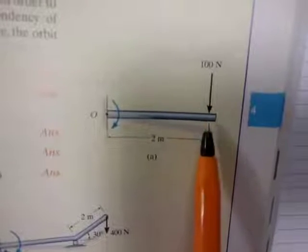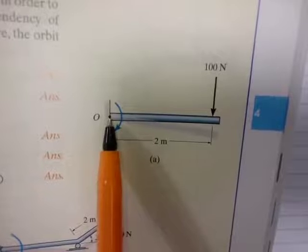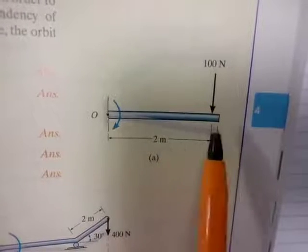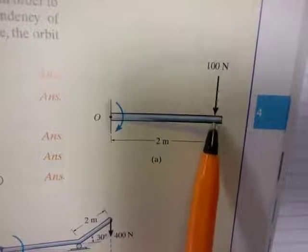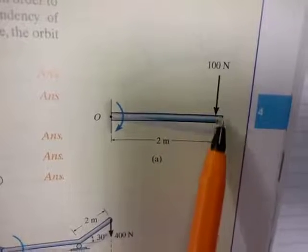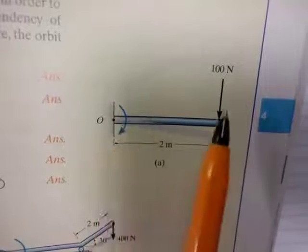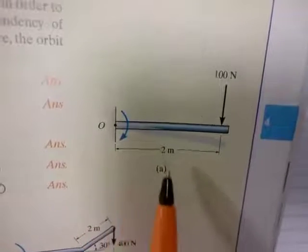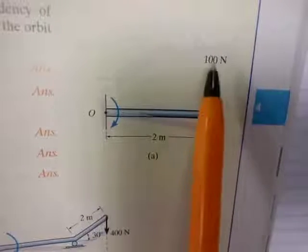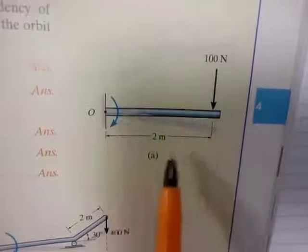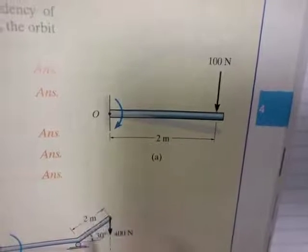If we have a force of 100 N applied to this beam and we're looking at point O, we put our fingers in the direction of the force and we curl them towards point O. This gives us an indication that applying that force will cause a clockwise rotation of the beam about point O.